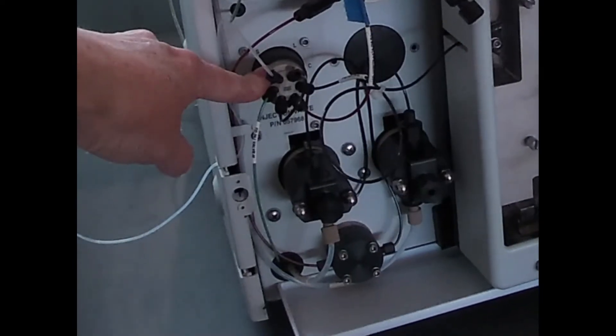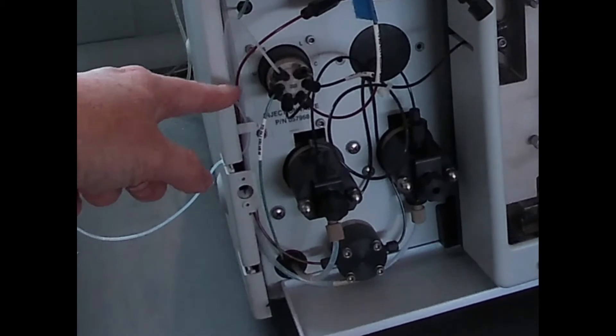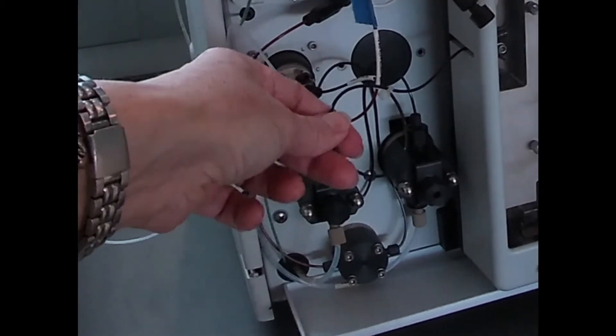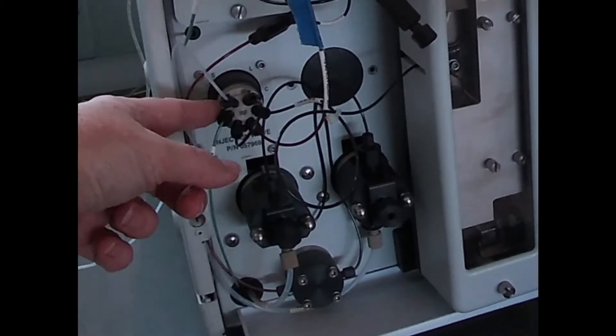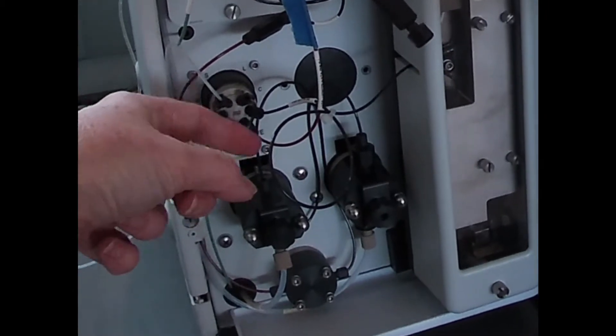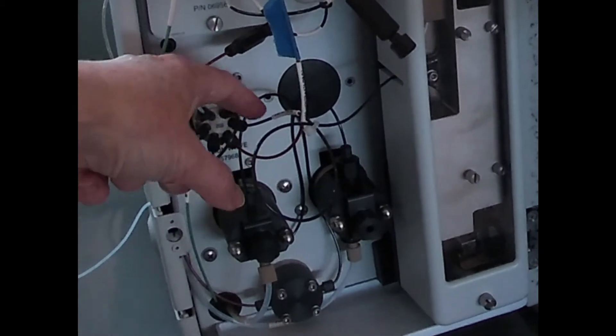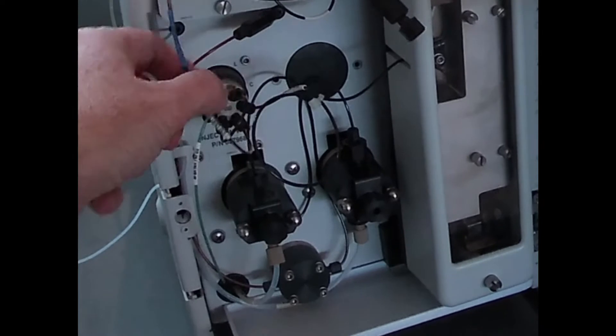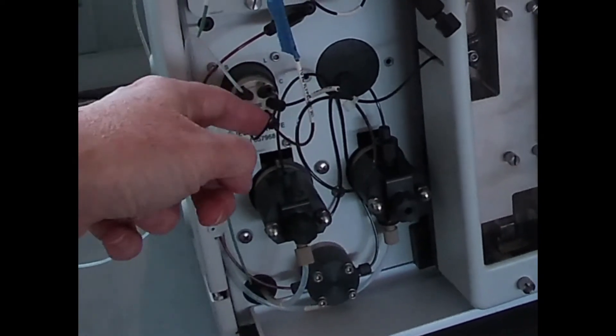This is a selector that allows us to either be pumping eluent directly onto our column, or we can change the direction to push our sample out of the sample loop and put that on column. So our injector allows us to get reproducible amounts of sample injected.